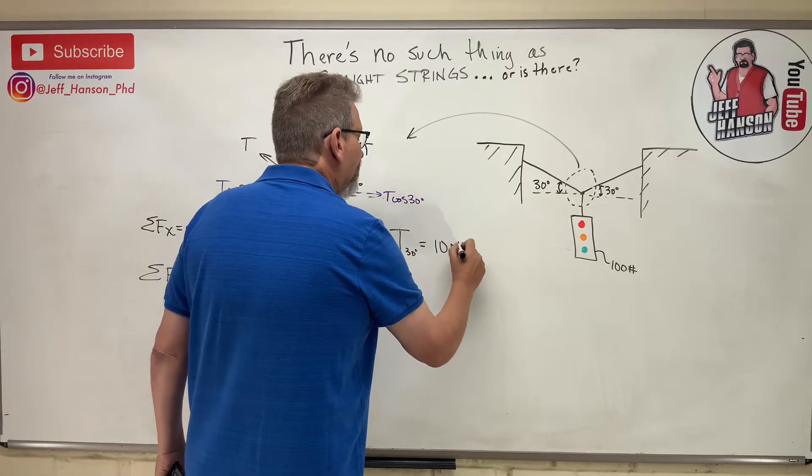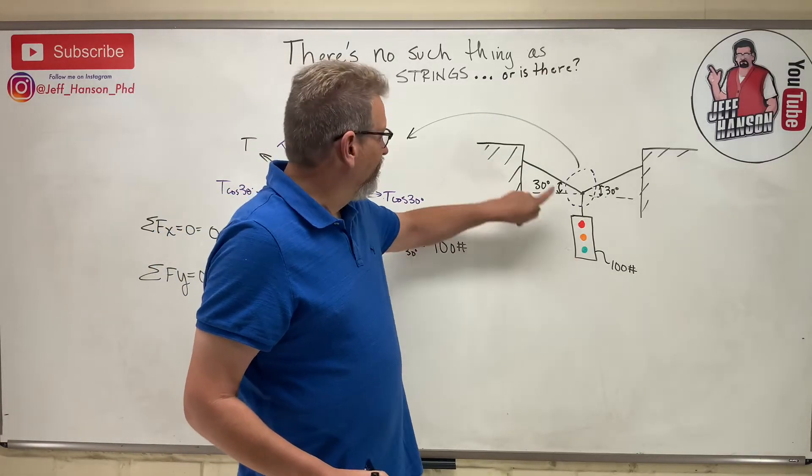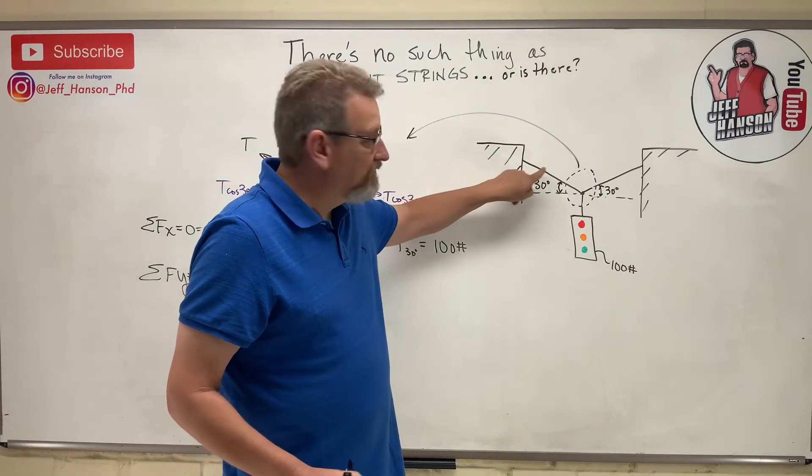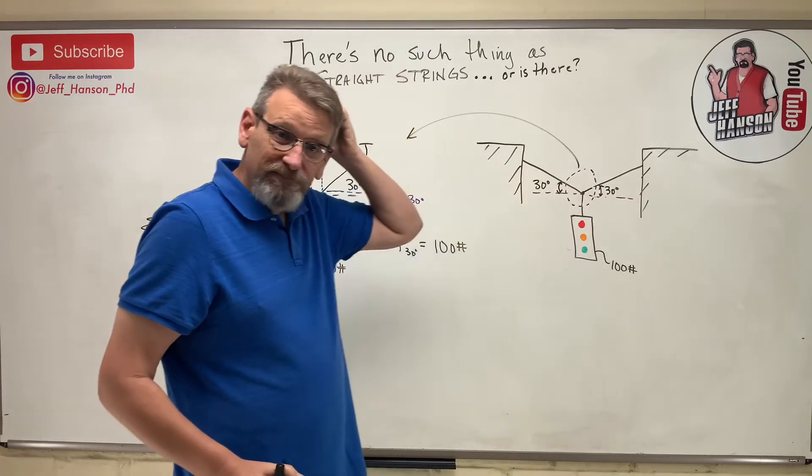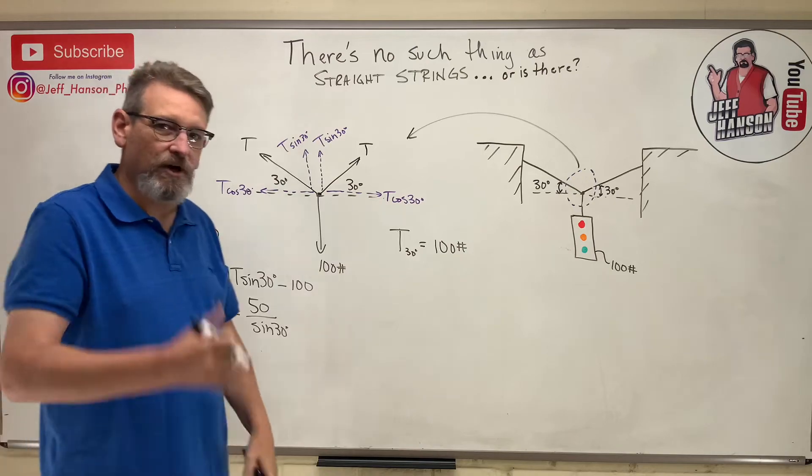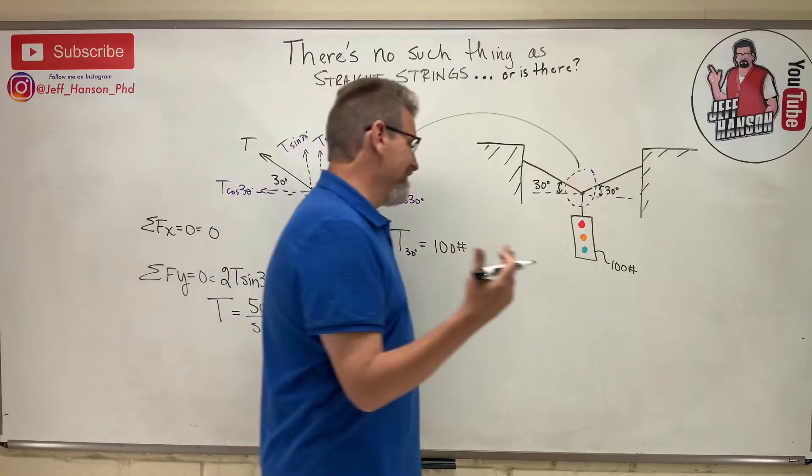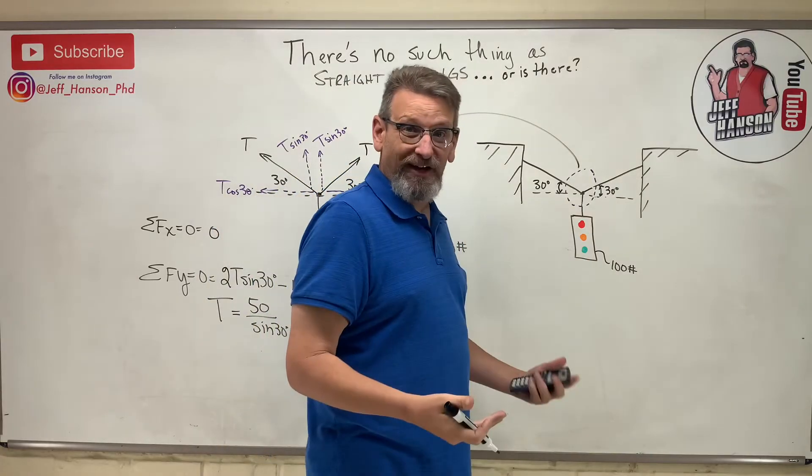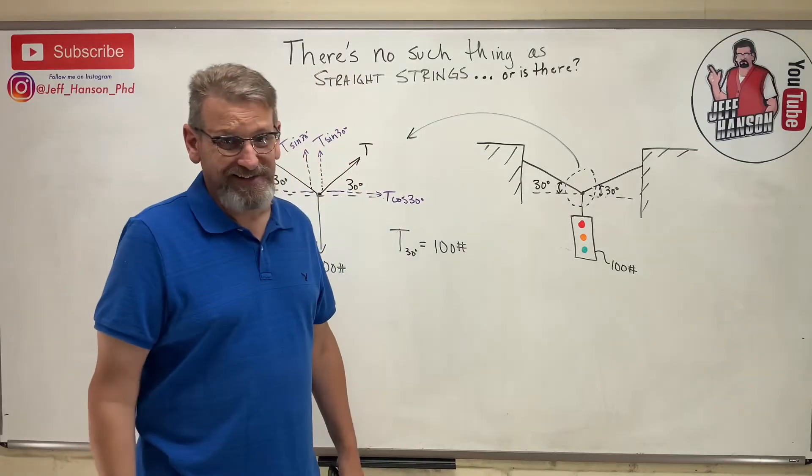What's that telling me? That tells me that to hold up that 100 pound light, that string has to have 100 pounds of tension in it and that one has to have 100 pounds of tension in it at 30 degrees. Oh crud, you know what we just got a call. This is the traffic department. A truck tried to go under that today and hit it, so they said you've got to go down there and raise that up.